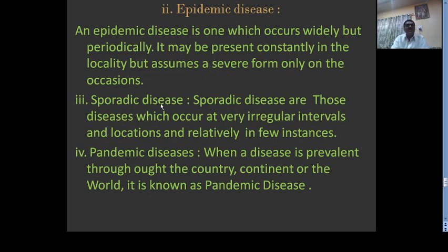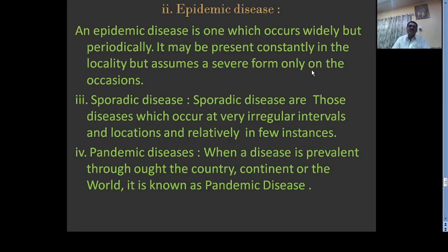Sporadic diseases are those which occur at irregular intervals and locations, and in relatively few instances. Examples include leaf spot of many plants caused by Alternaria.